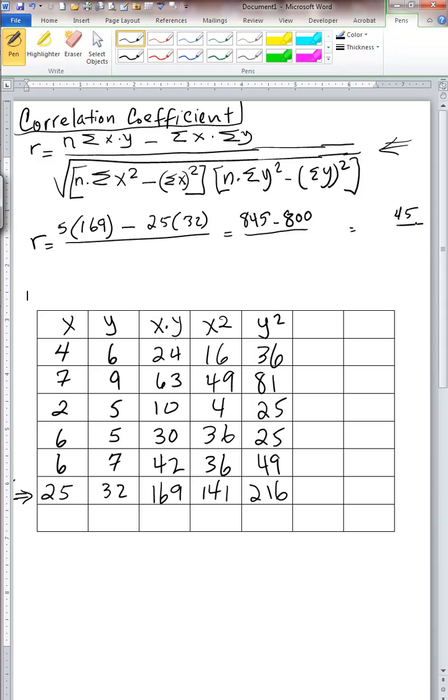Let's go to the denominator. For the denominator, notice that we need to take a square root. I will erase these for now because that denominator is pretty big. We have two terms in our denominator. n is 5, and then we multiply that by the summation of the x squared column. So here's the x squared column, and the summation of it is 141. So 5 times 141.